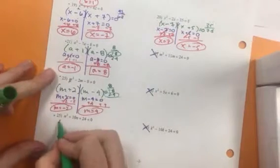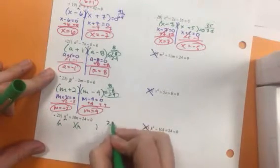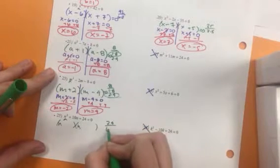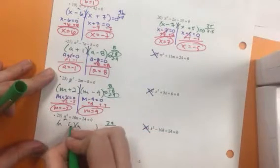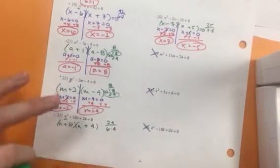Last one, we are going to factor. N breaks up into the front. 24. We can use 6 times 4. That will give us a 10. And because they are positive, I need positive 6 and positive 4.